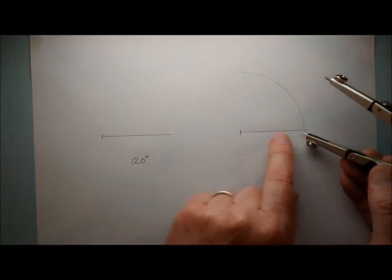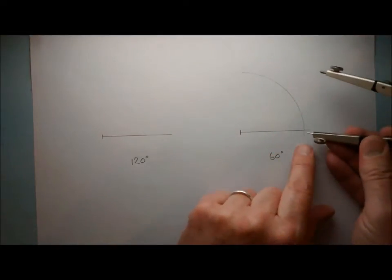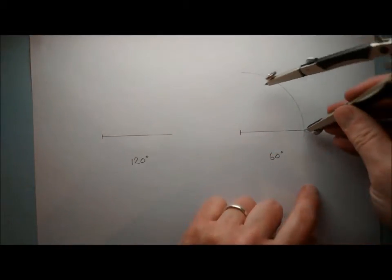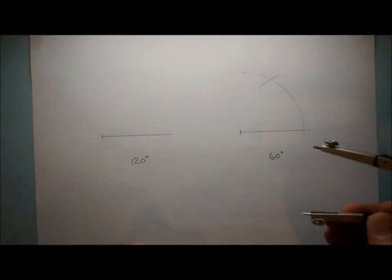wherever this arc cuts the line, put my compass point here and now just mark off a little arc here.